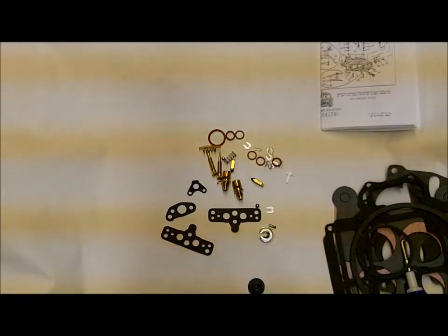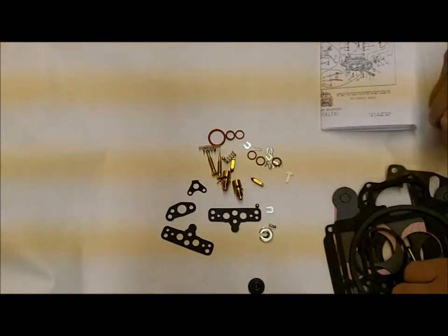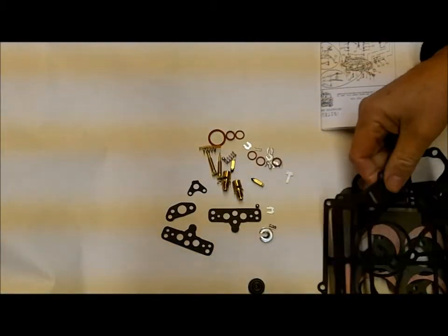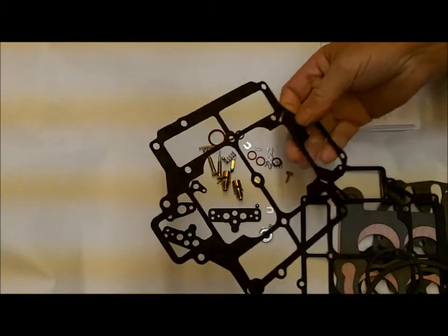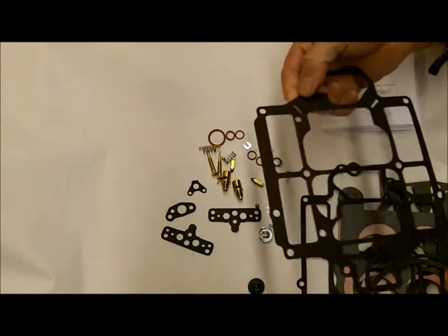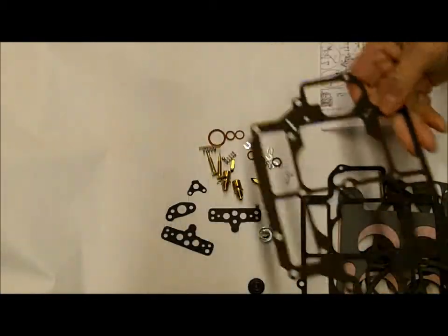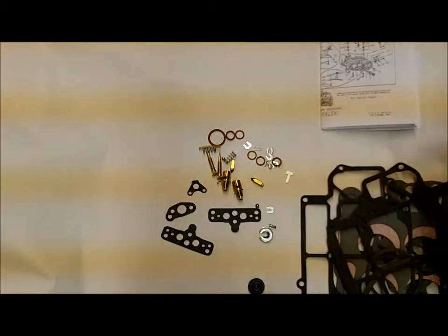The only other thing you can do beyond that is to take your carburetor apart and start comparing parts. Compare it to pictures. We have some very good pictures and of course these videos of the different parts. Start comparing your float bowl gasket, your accelerator pump. A lot of kits will put the length of the pump on the site.